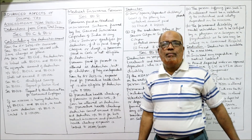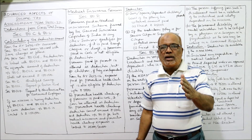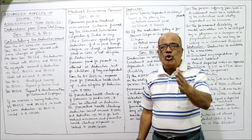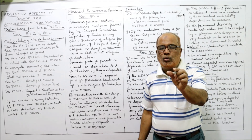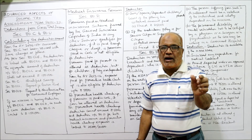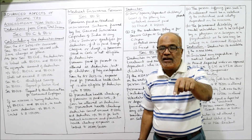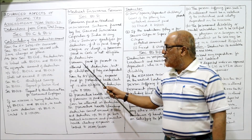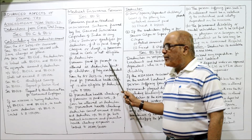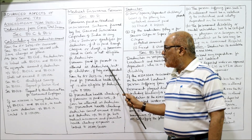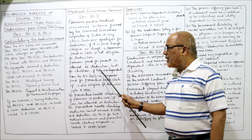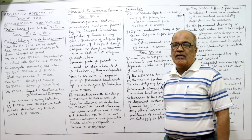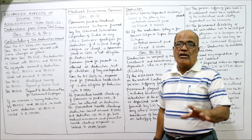First condition to remember: medical insurance premium should be paid either through cheque or draft. If it is paid in cash, it is not allowed as a deduction. Premium paid for parents is also allowed as deduction. But for children, it is allowed only if the children are dependent on the SSC.